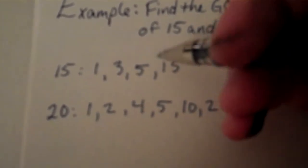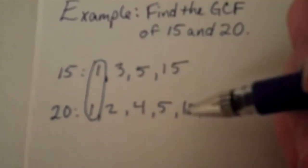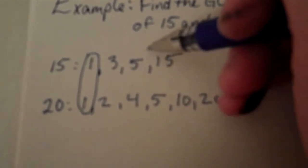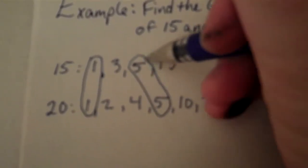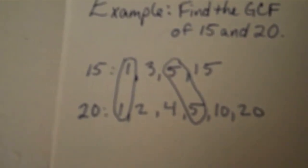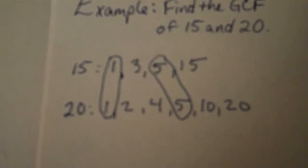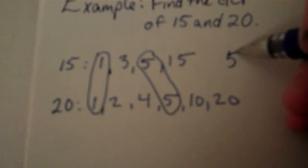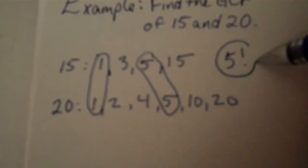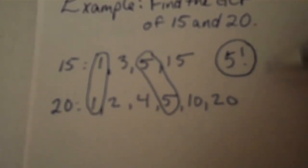I see a couple of shared factors. One appears on both lists, and five appears on both lists. These are both common factors of fifteen and twenty. However, only five is the greatest common factor — it's the biggest one.